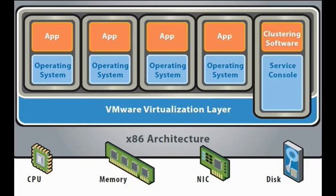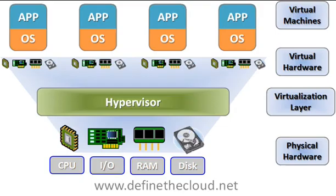The operating system running on a physical server gets converted into a distinct OS running inside the virtual machine. The hypervisor controls the processor, memory and other components by allowing several different operating systems to run on the same machine without the need for a source code.